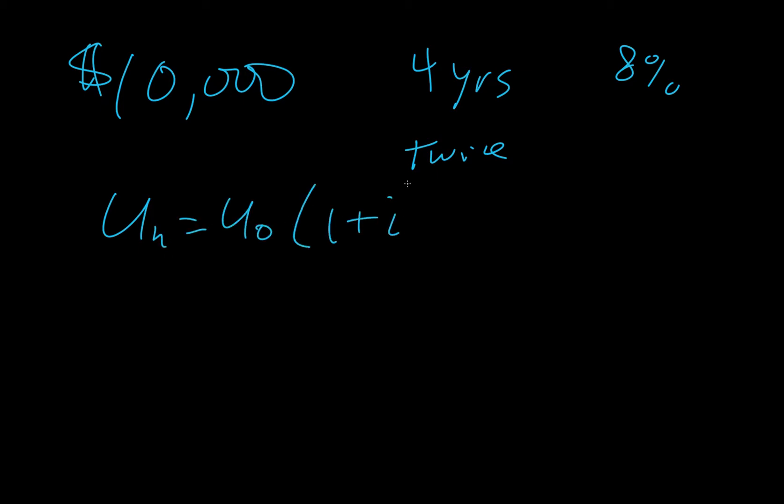Okay. So this one says, how much does Ivana need to invest now to get a maturing value of $10,000 in four years? Given interest is 8%. And it's compounded twice annually. Give your answer to the nearest dollar. Okay. So we don't know our initial value, but we know our ending value. So once again, we have un, u naught, 1 plus i raised to the n. So this is the formula we're using.